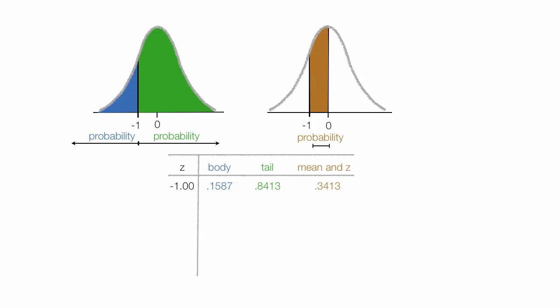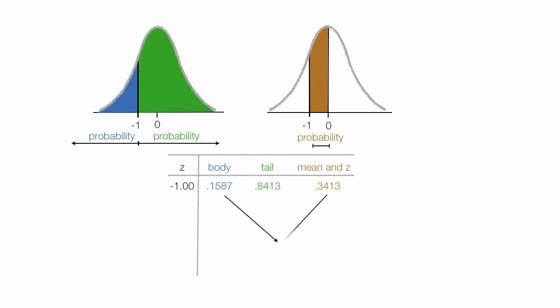Like before, these are areas or probabilities — the values in the table. The body plus the tail, again, is going to equal 1, which is 100% of the values under the curve. The body plus the mean-to-z value — the blue plus the brown — is equal to 0.50, or 50% of the area under the curve.